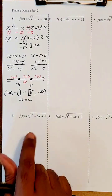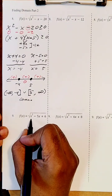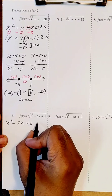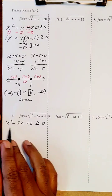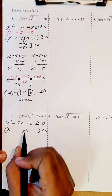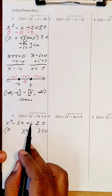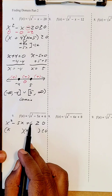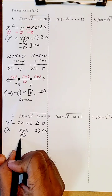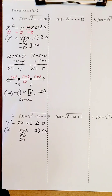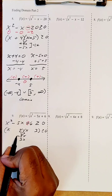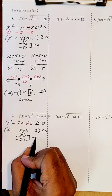Now let's find the domain of number nine. We take the inner expression x squared minus five x plus six and set it greater than or equal to zero. We factor into two binomials: x times x for x squared, and for six I have choices — one times six or two times three. I'll choose two times three, giving two x and three x. The signs must be the same and give negative five x, so I use negative and negative.